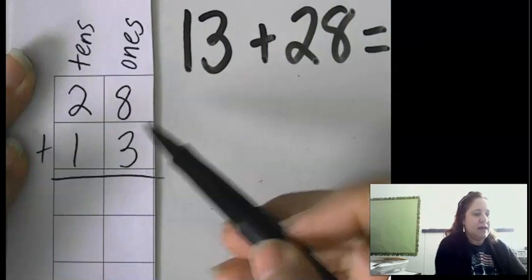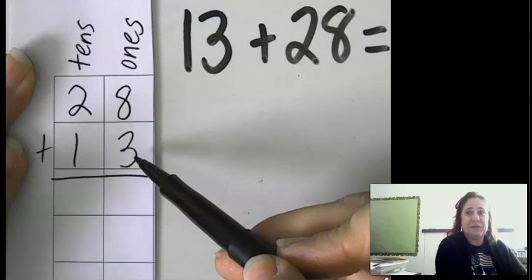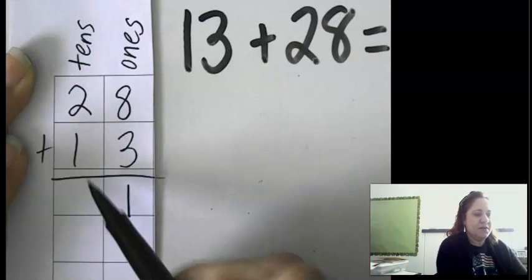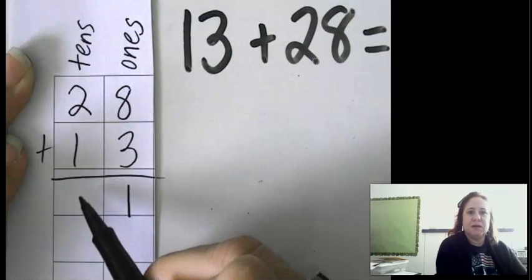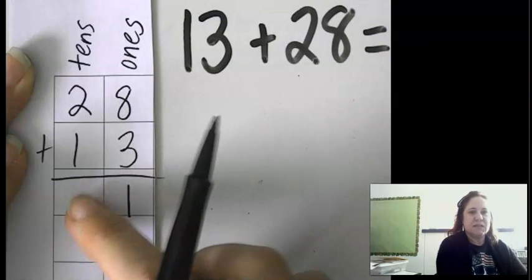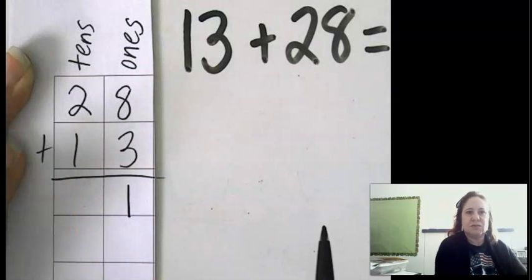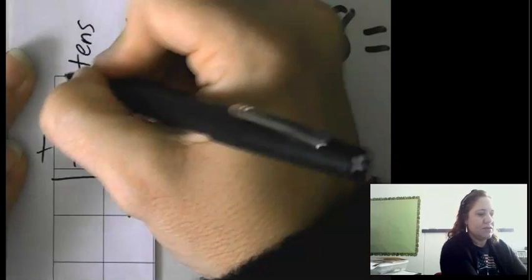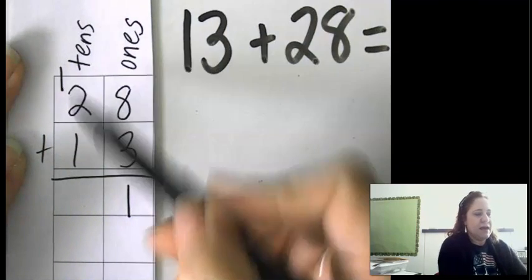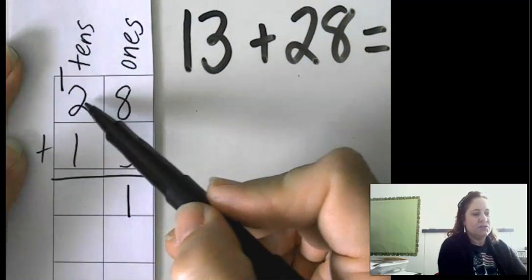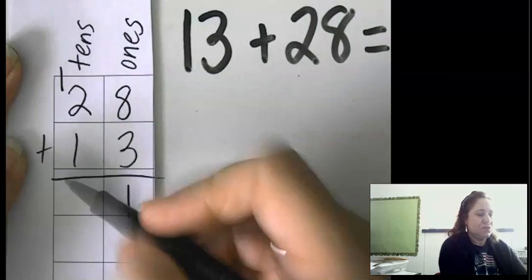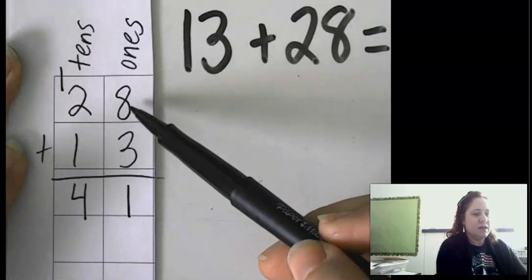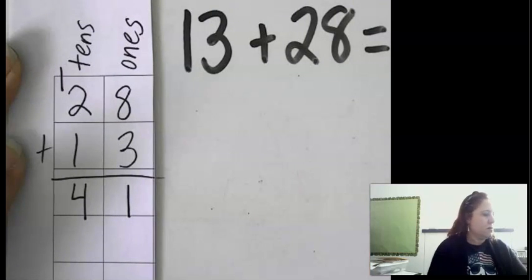Okay, 8 plus 3 is 11. So now I'm going to have to carry. I can't put the tens place in the bottom here because it's going to be in the way of our next answer, the 2 plus 1. We can't put the 1 here because it would be in the way, so we're going to bring it to the top. So now we have 1 plus 2 plus 1, which is 4. So when you add 28 and 13 together, you get 41.